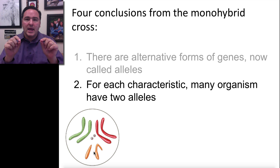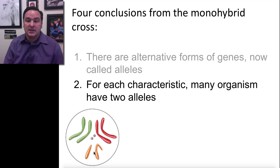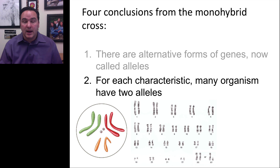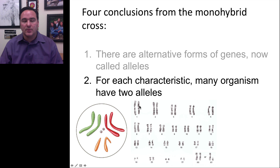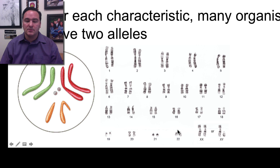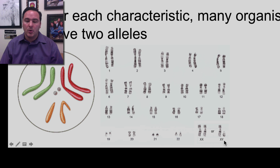It's this pairing of two chromosomes that leads to the conclusion that most organisms seem to have two alleles. This is also the case for humans. We have 23 pairs of chromosomes. We get one chromosome from mom and one from dad, and they come together when the egg and sperm meet in fertilization. Now you have a full set — 23 pairs of chromosomes. 22 of them are called autosomes, and the 23rd pair are the sex chromosomes.